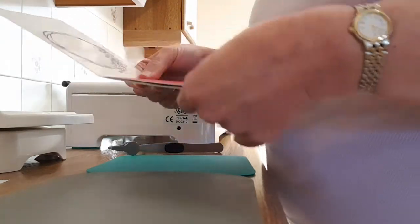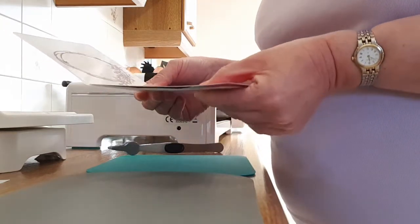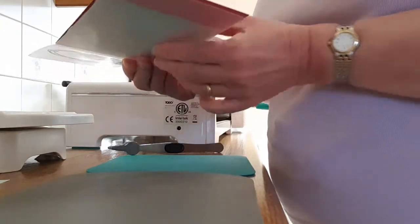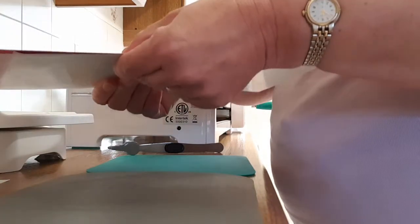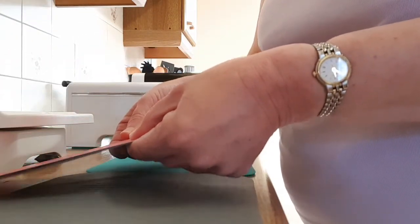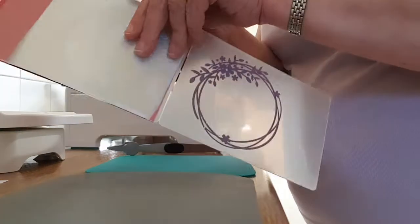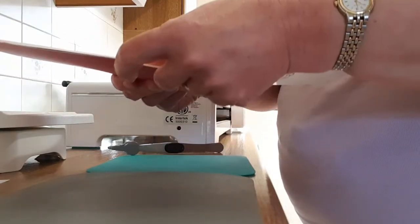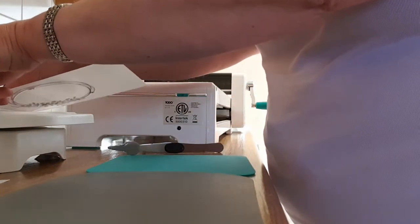The embossing folder stays open. I'm not actually embossing the card first, just using the ridges as a foiling template. And then this goes onto the GoPress, card first with the embossing folder on top.